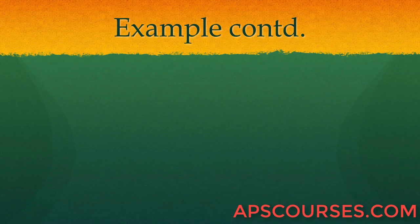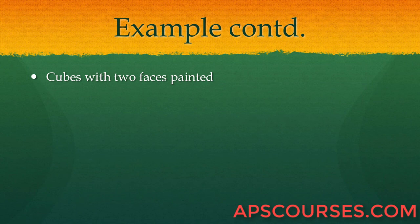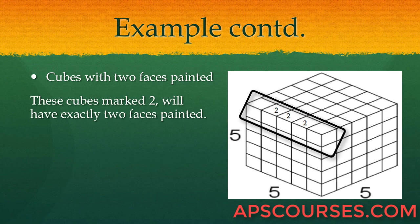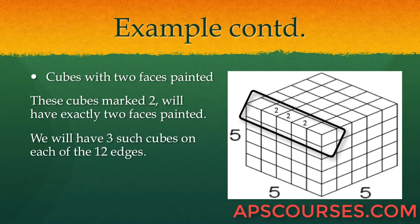Next part: cubes with 2 faces painted. Along each edge, there are 3 cubes that have exactly 2 faces painted. Since there are 12 edges on a cube, there are a total of 3×12 = 36 cubes with 2 faces painted.